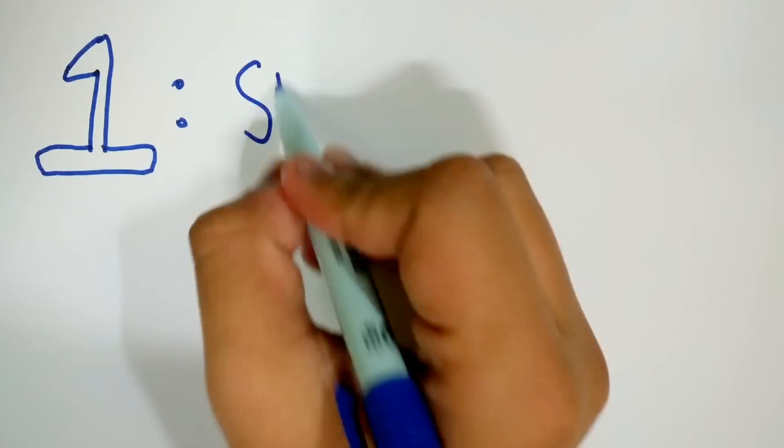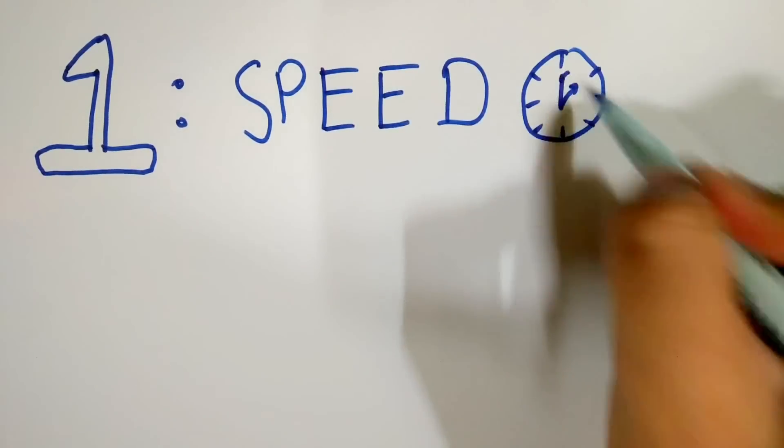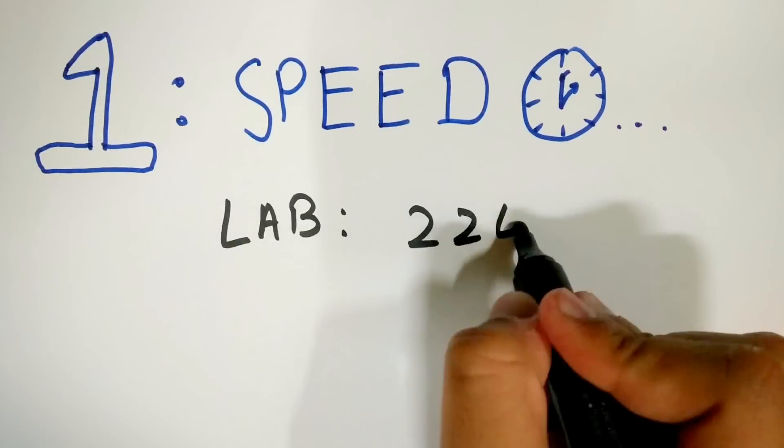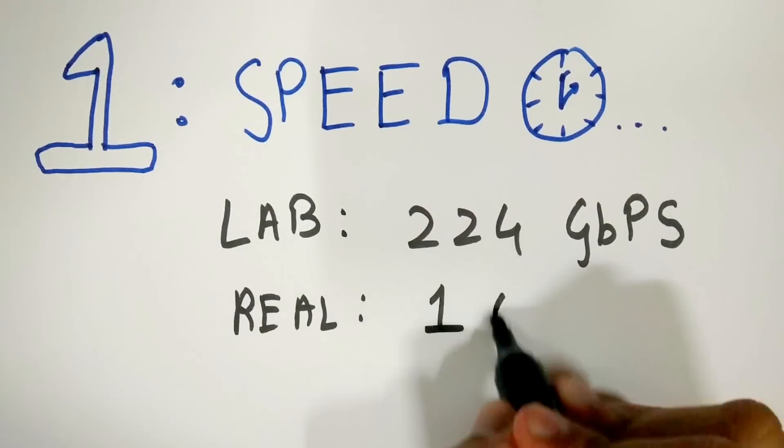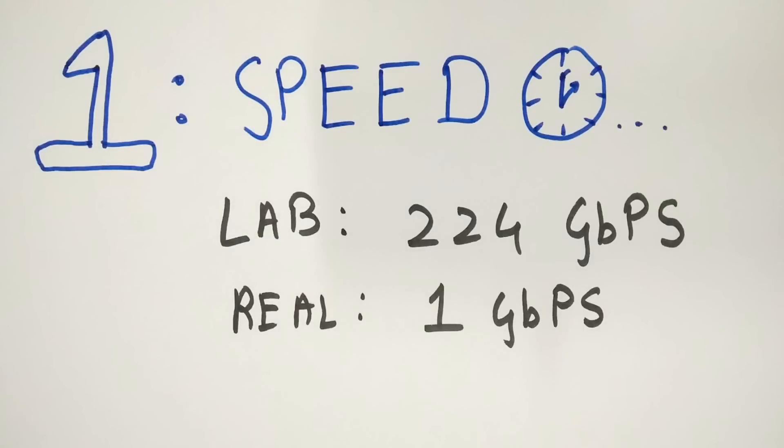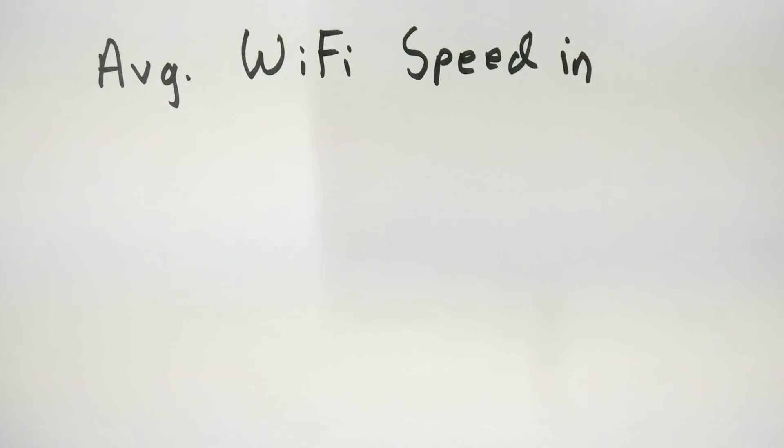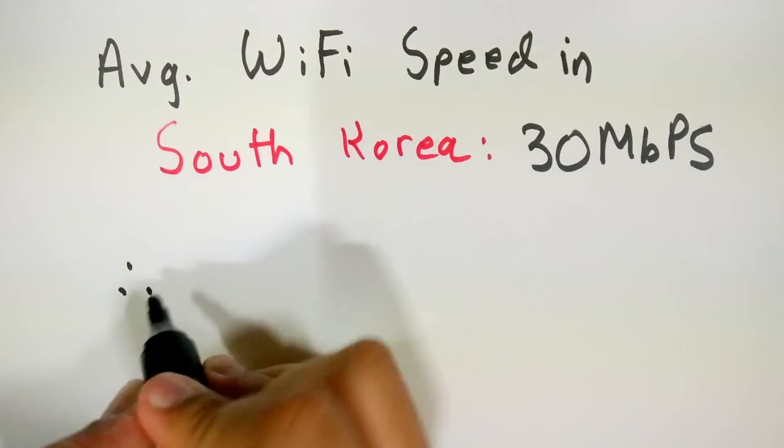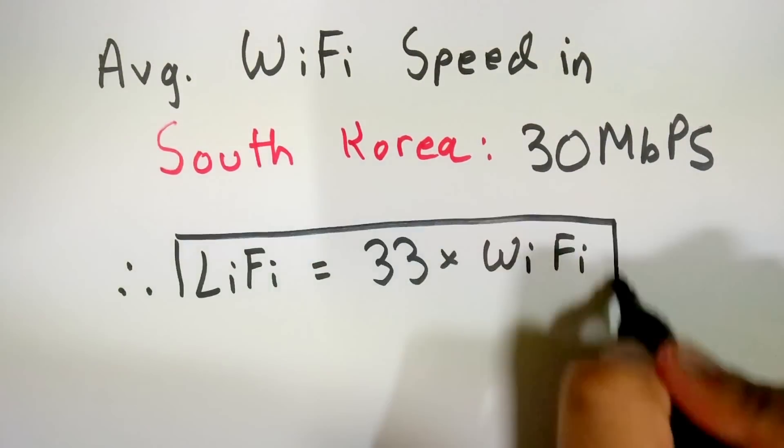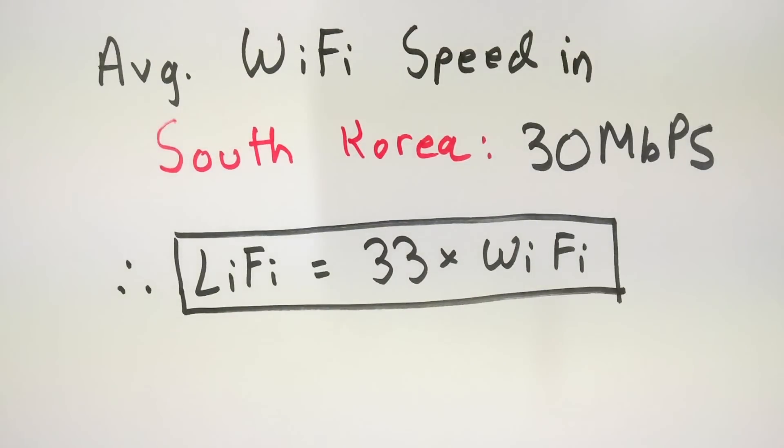Reason number one, the speed. Li-Fi has clocked about 224 gigabits per second in lab conditions and in real-life simulations, it can clock about 1 gigabit per second which is quite fast considering that the average Wi-Fi speed in the country with the fastest Wi-Fi, South Korea, is about 30 megabits per second. This makes the most basic Li-Fi about 33 times faster than the fastest Wi-Fi.